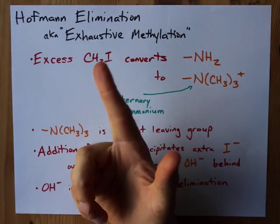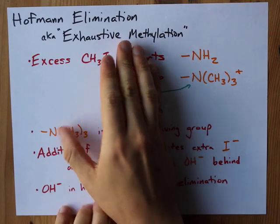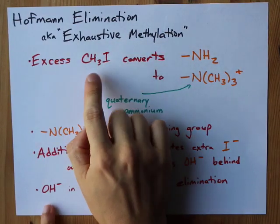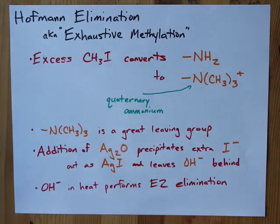Let's talk about the Hofmann elimination, also known as exhaustive methylation. This involves adding excess methyl iodide, CH3I, to a primary amine.